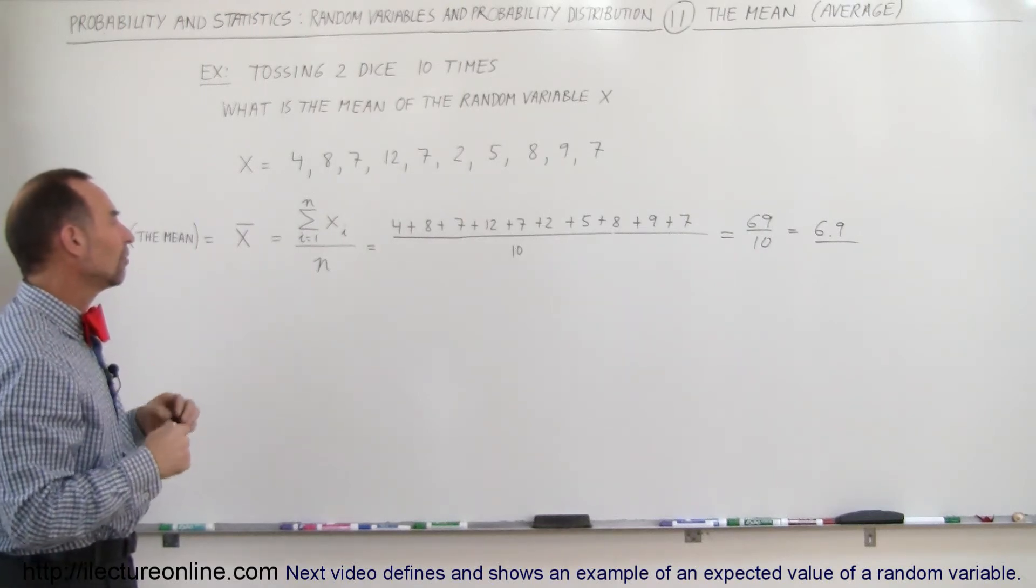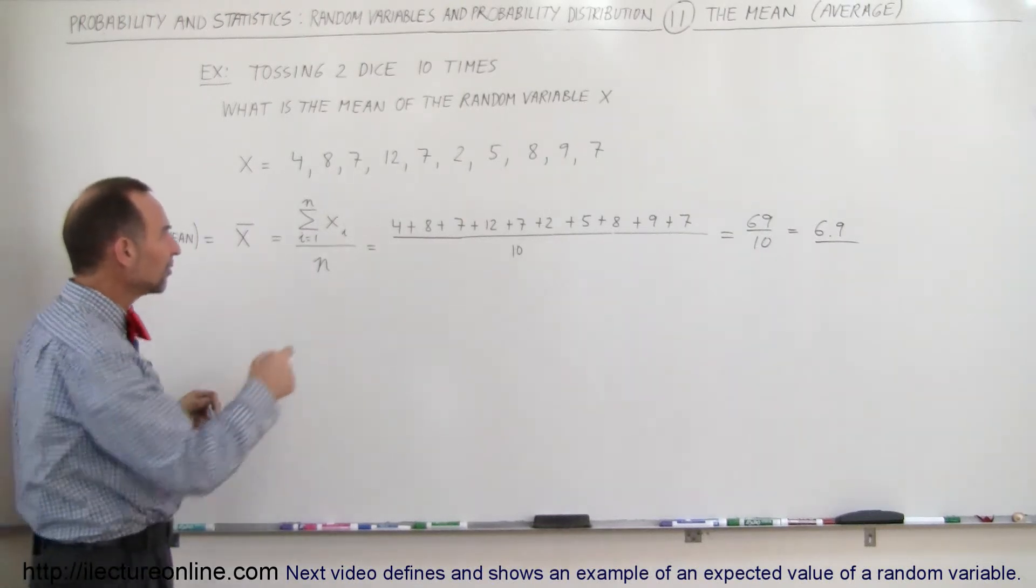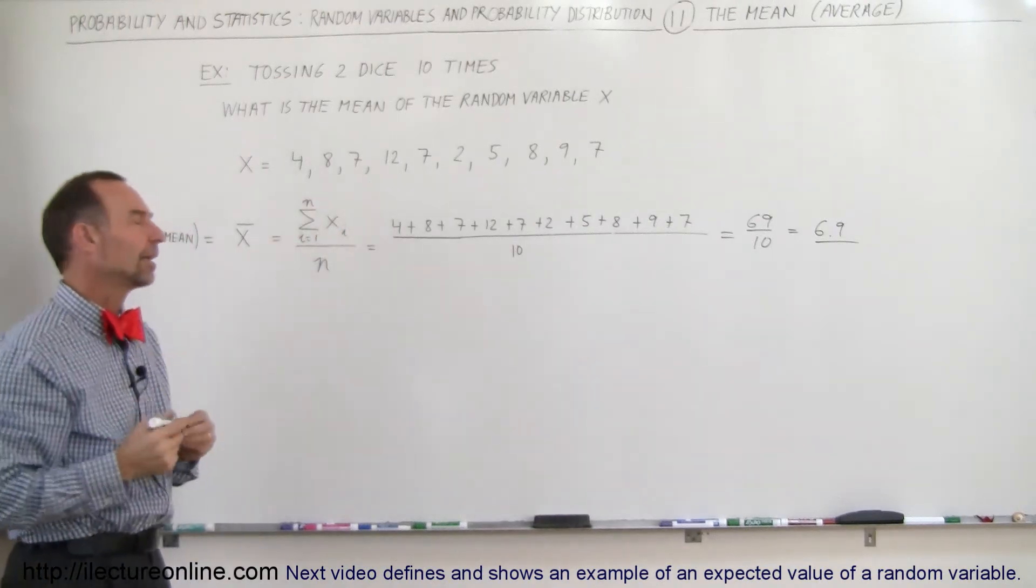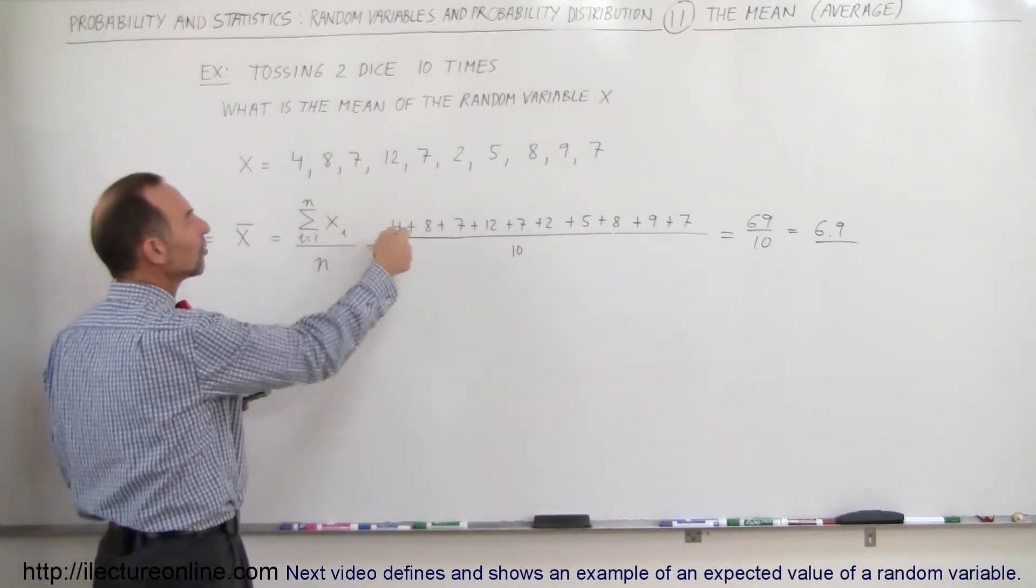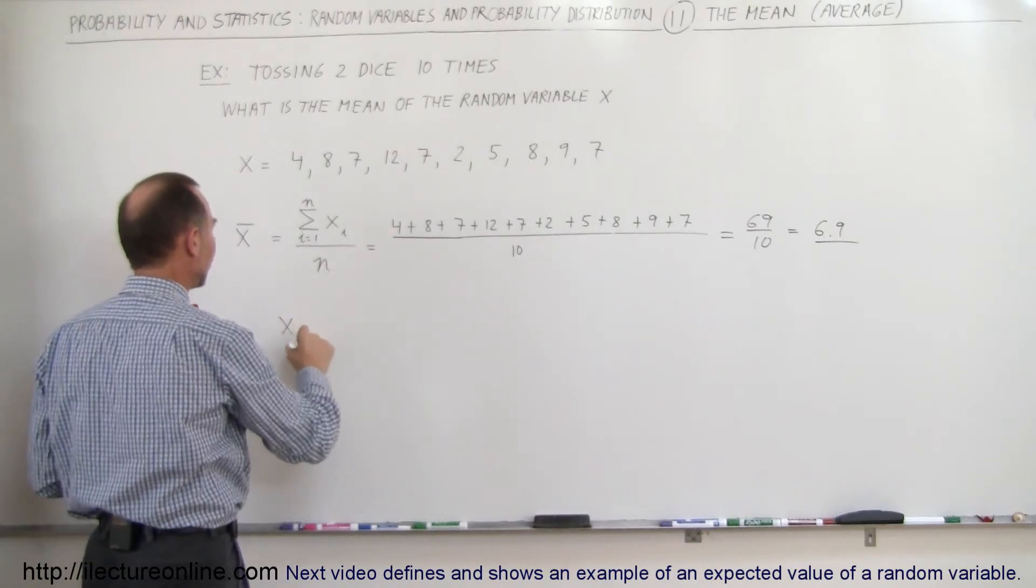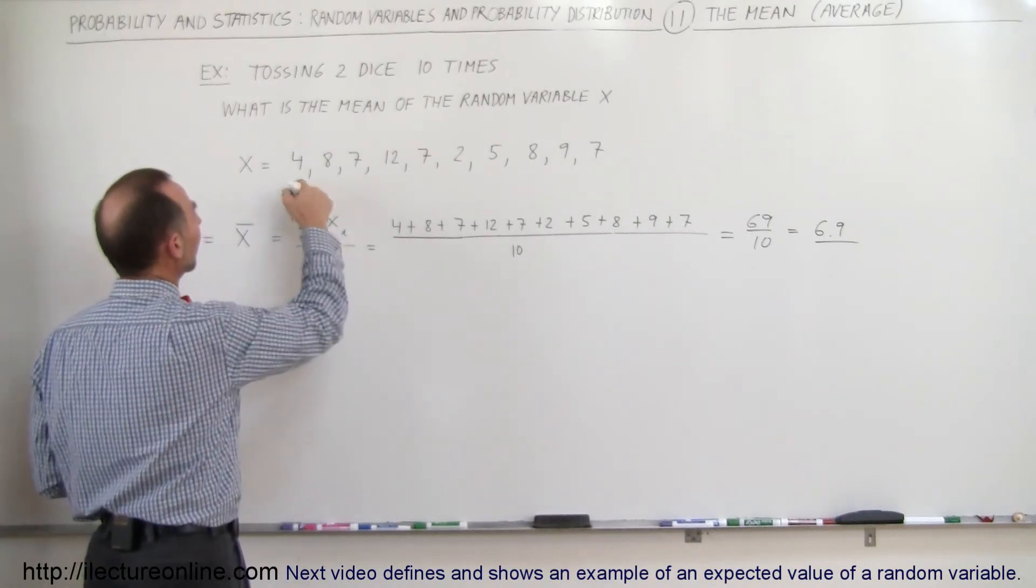So in another way of looking at it, for example, this expression, because this confuses a lot of people, the i is just simply a subscript. So for example, X sub 4 is equal to the fourth item.